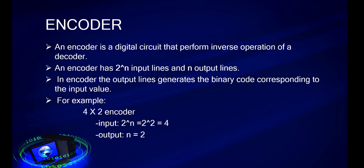For example, if we take 4 into 2 encoder, that is the value of n is 2. The input lines will be 4 and the output is n, so the output lines will be 2.